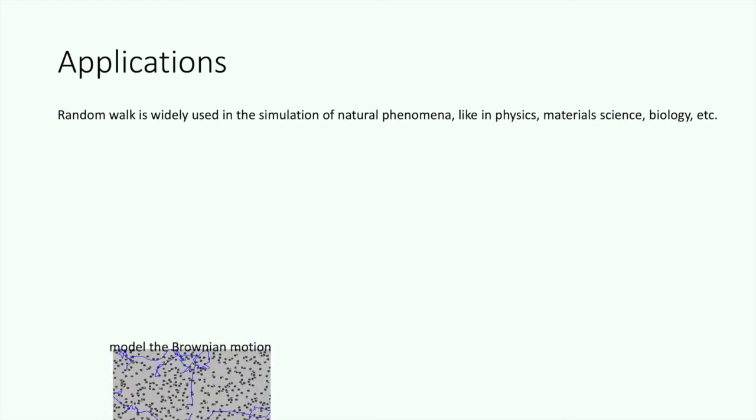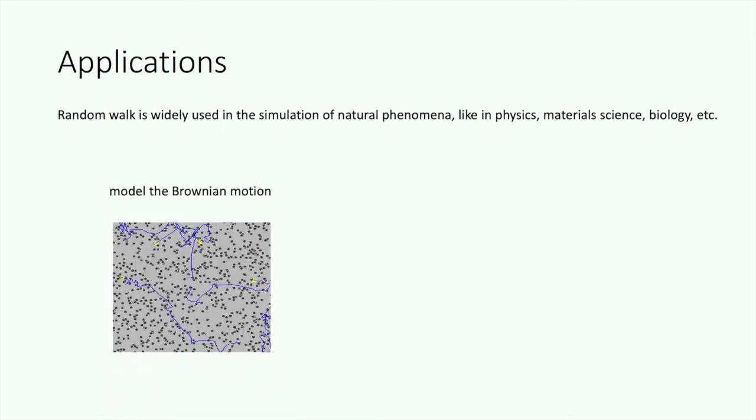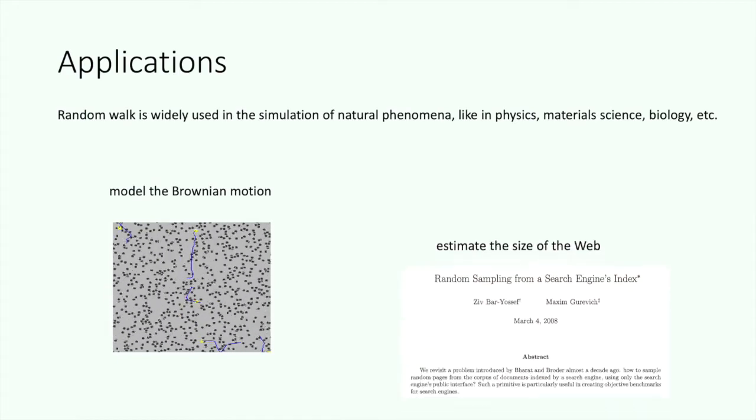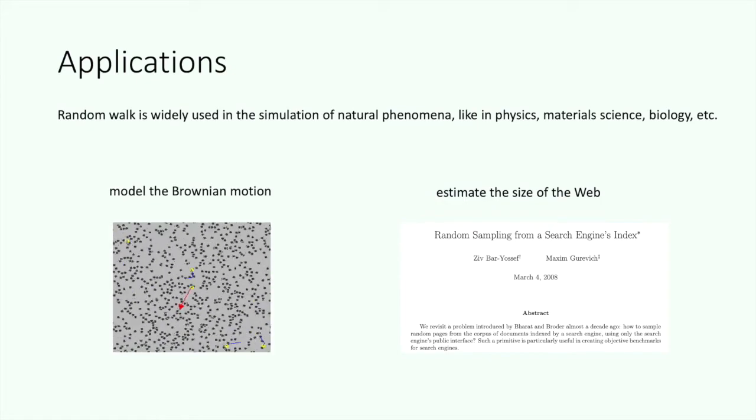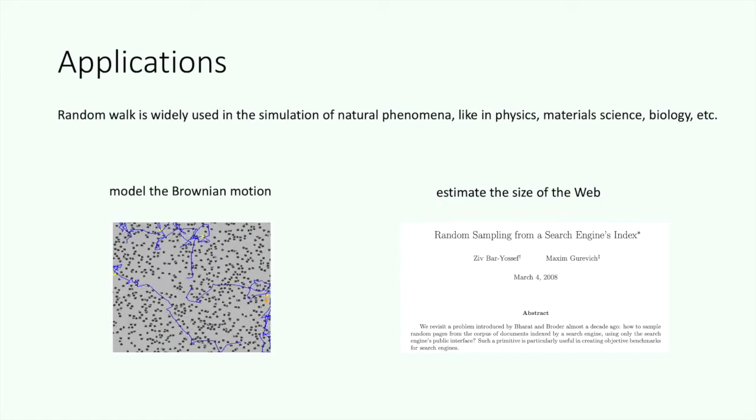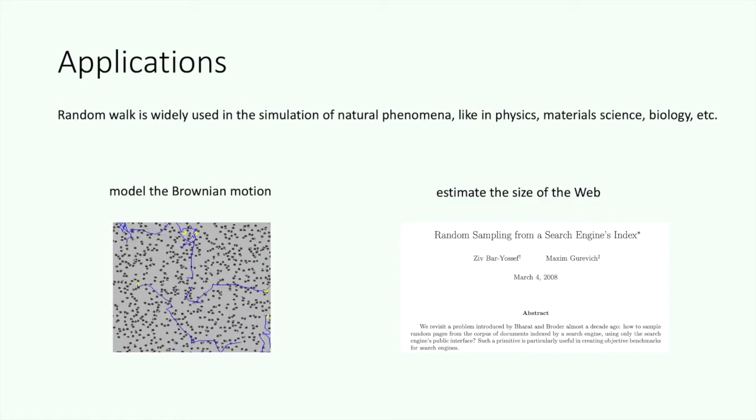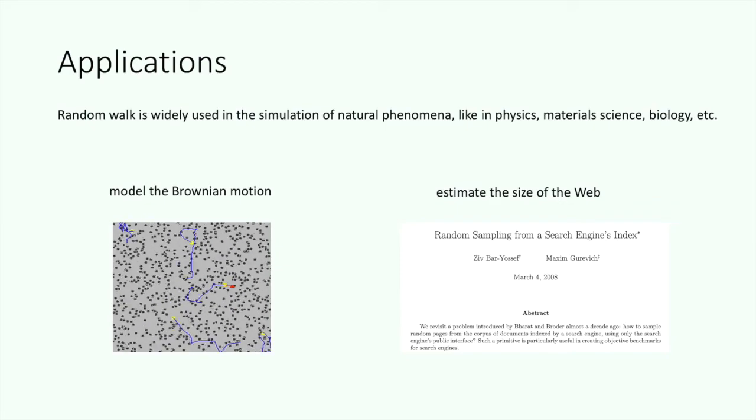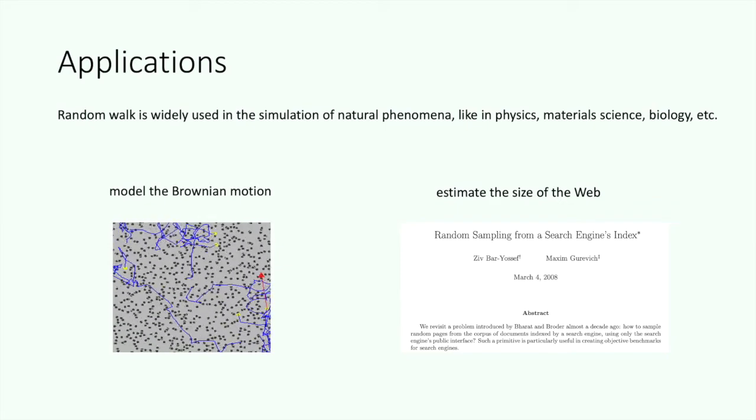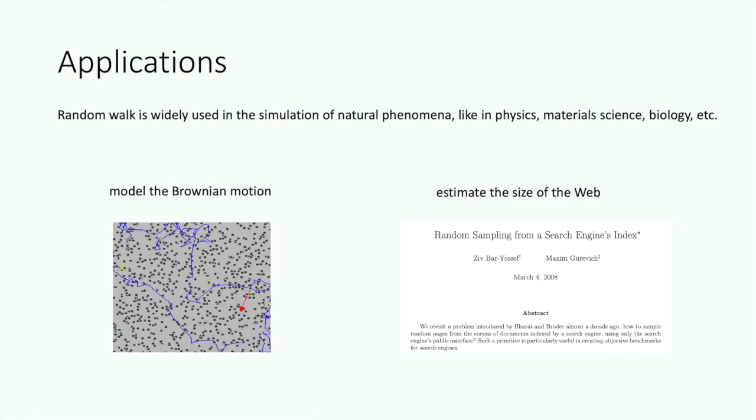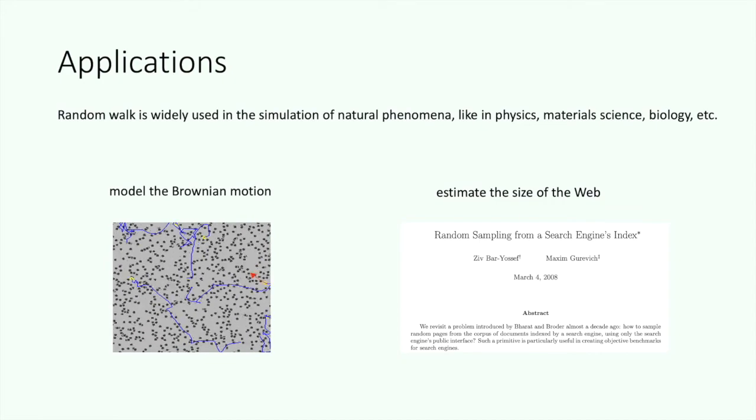So yeah, the random walk is widely used in the case that we need to simulate natural phenomenon. I will give you two examples. One is in physics, we can use the random walk to model the Brownian motion. Another one sounds really interesting. In computer science, we can use the random walk to estimate the size of the web. So if we can use the power of the quantum random walk, we can perform some impossible simulations, which is really useful for researchers. We can expect it to bring us more technology upgrades.